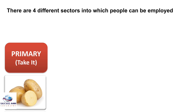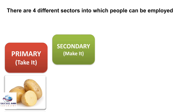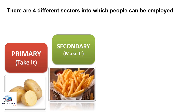The next one is the secondary sector. You can recall this as 'make it' because it involves transforming raw materials into finished products. For example, Irish potatoes from the primary sector are transformed into chips. People in this sector could be employed as factory workers or carpenters.